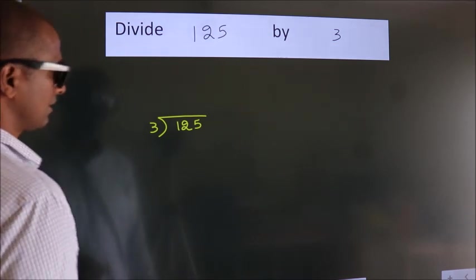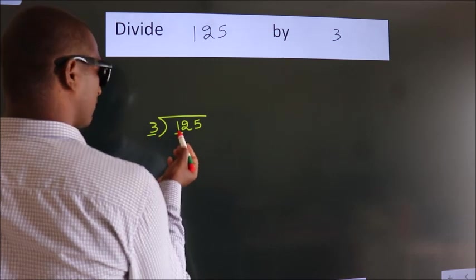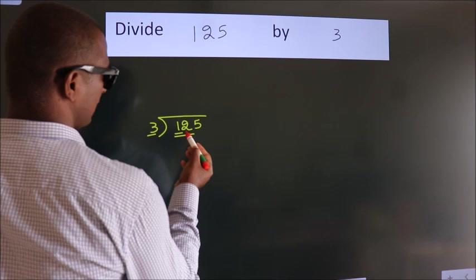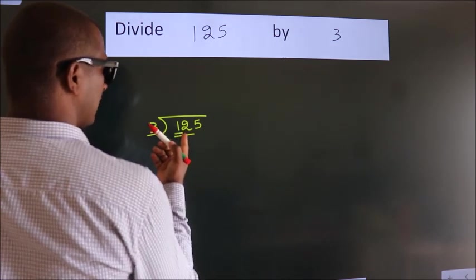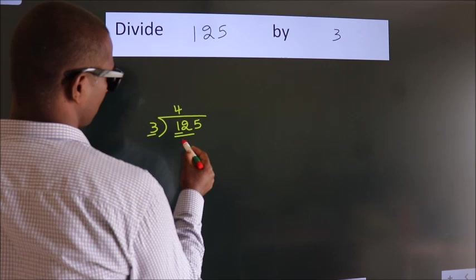Next, here we have 1, here 3. 1 smaller than 3. So we should take 2 numbers, 12. When do we get 12? In 3 table, 3 4s 12.